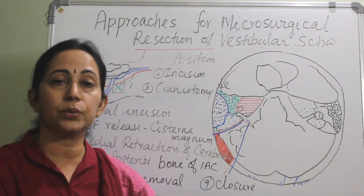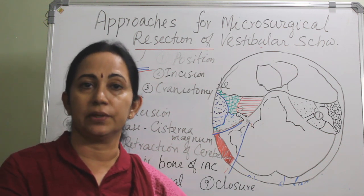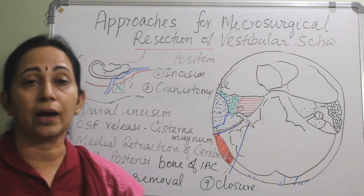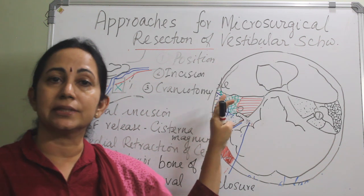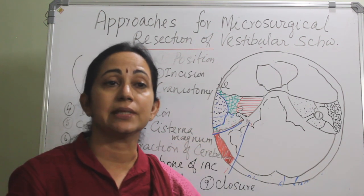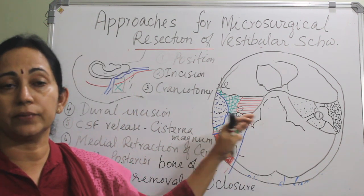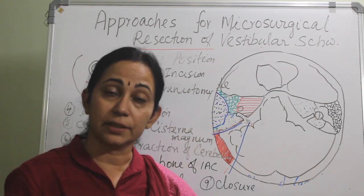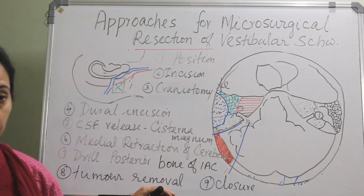The main disadvantages compared to the translabyrinthine approach: first, access to the facial nerve is very much limited — if there is an injury, easy grafting of the facial nerve is not possible. Second, as we are not doing anything with the eustachian tube, there is more chance of post-operative CSF rhinorrhoea. Also, since we are retracting and manipulating the cerebellum, there will definitely be post-operative chronic headache. So this is about the retrosigmoid approach.